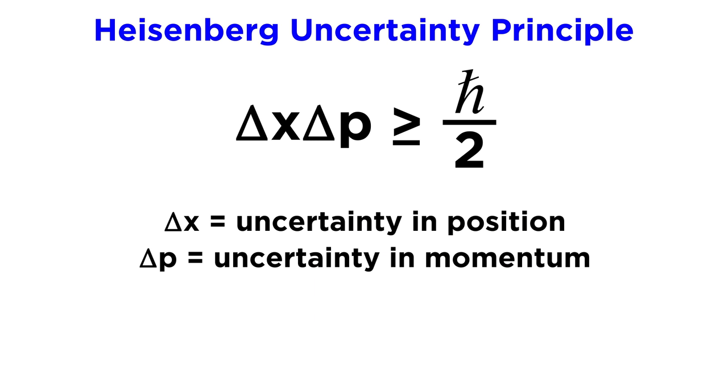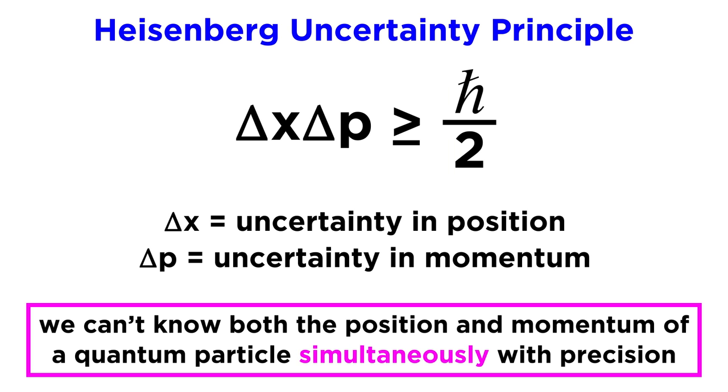all measurements must satisfy the Heisenberg uncertainty principle, which in the case of the complementary variables position and momentum, is written as delta x times delta p is greater than or equal to h bar over 2, where h bar is the reduced Planck constant, equal to h over 2 pi, making this term as a whole equal to h over 4 pi. What this means is that we can't know both the position and momentum of such a particle simultaneously with supreme precision. There must be some uncertainty associated with one or both parameters. And the more certain one is, the more uncertain the other becomes.